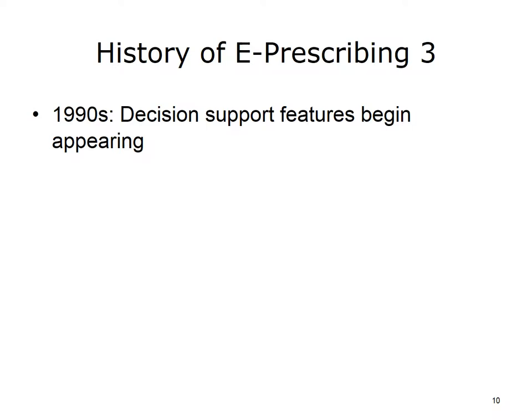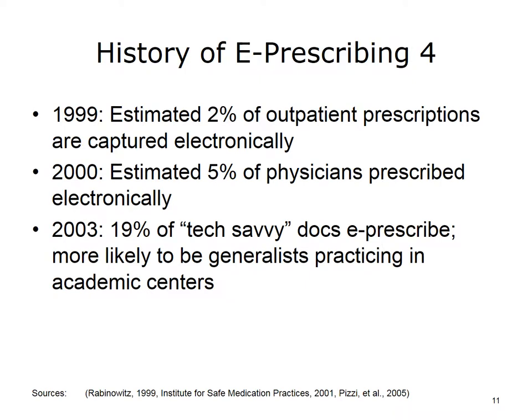In the early 1990s, decision support features began appearing in CPOE and e-prescribing systems. Decision support systems were very basic at the time. For example, the computer may have reminded physicians to check for pregnancy if the patient was female and of reproductive age. During the 1990s, several isolated implementations of e-prescription systems continued, mostly in academic settings. By the end of the 1990s, an estimated 2% of outpatient prescriptions were captured electronically. At the turn of the century, an estimated 5% of physicians prescribed electronically. And in 2003, only really tech-savvy physicians were e-prescribing somewhat regularly, but still at a relatively low rate of only 19%. Those that were e-prescribing were more likely to be generalists practicing in an academic center.